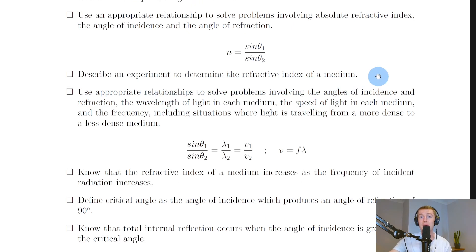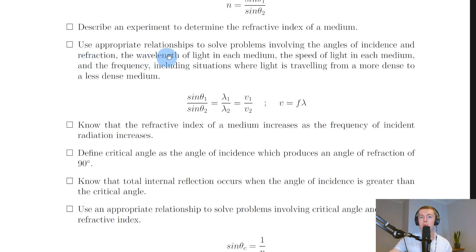To determine the refractive index of a medium experimentally, pass light from a ray box into the flat edge of a semicircular glass block. Change the angles of incidence and measure the corresponding angles of refraction. Record θ₁ and θ₂ in a table, take the sine of each angle, then plot sinθ₁ on the y-axis against sinθ₂ on the x-axis. The gradient of the resulting straight line gives the refractive index n.